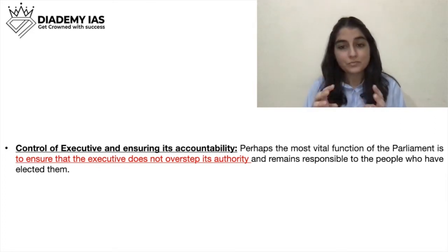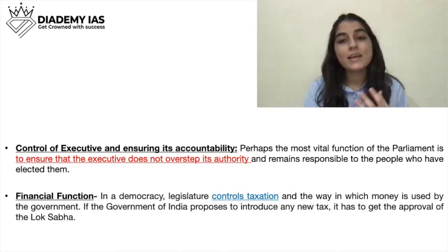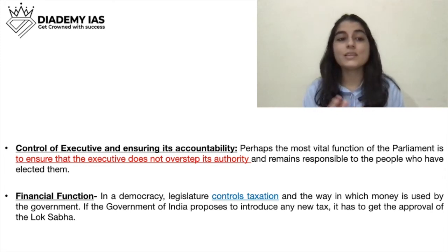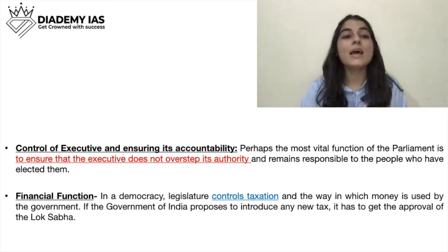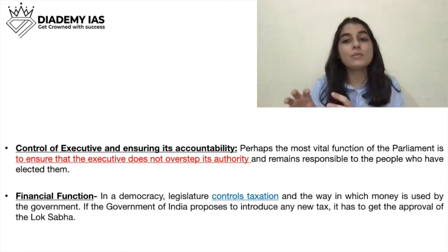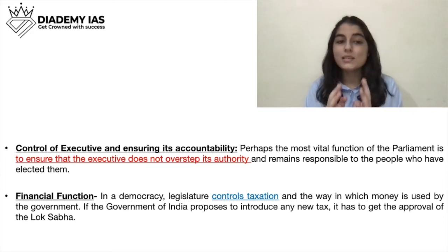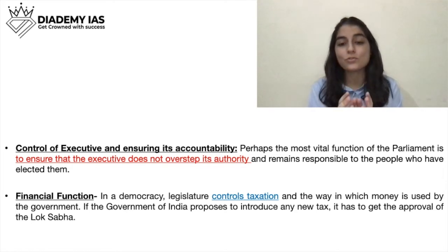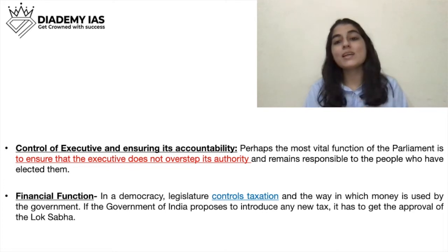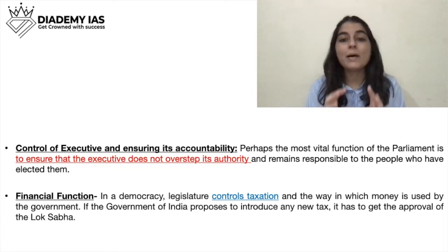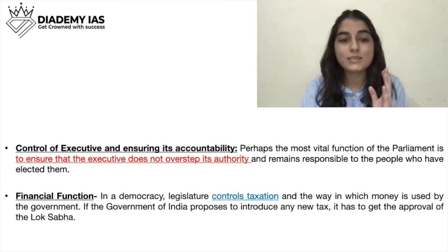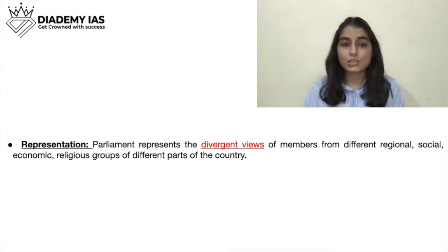The third function is the financial function. If the government introduces any new law or new tax, the parliament will ask them why this new tax is needed. Parliament asks how all taxes collected are being spent, and this is how they control the executive financially. So all the country's finances and how the government spends them are controlled by the parliament.